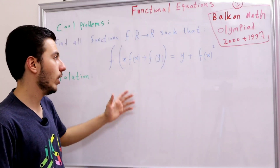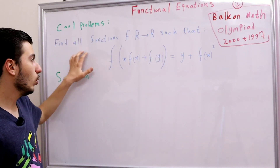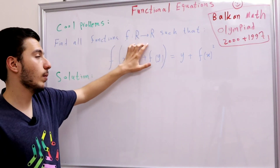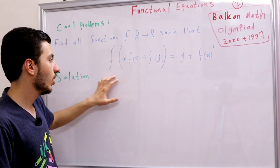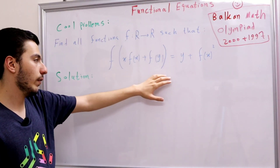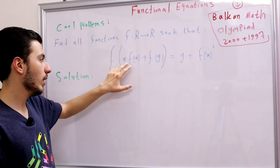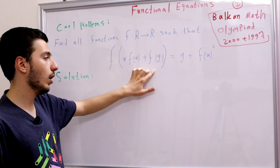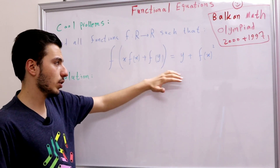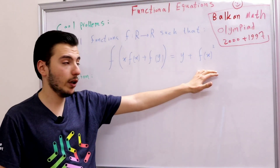Let's look at our problem. Find all functions f from ℝ to ℝ such that the following functional equation holds: f(x) · f(x + f(y)) = y + f(x)².